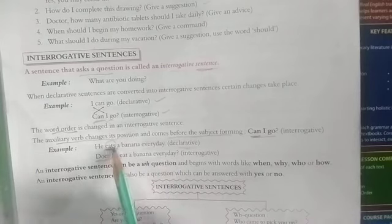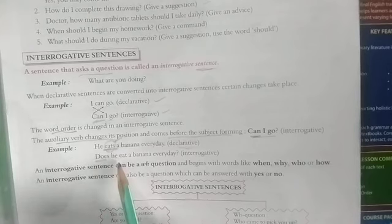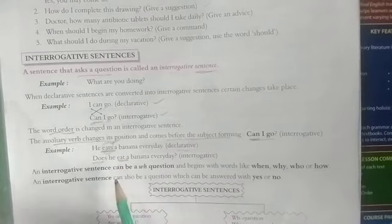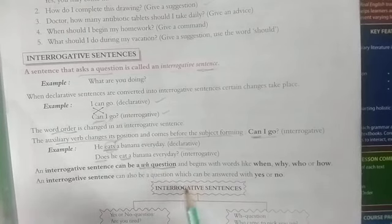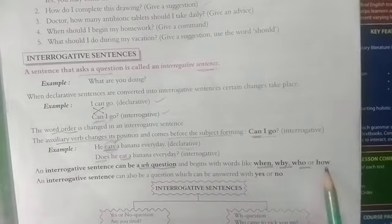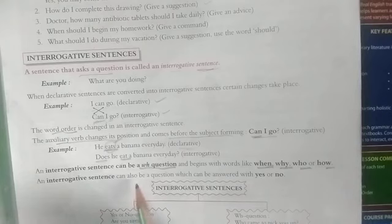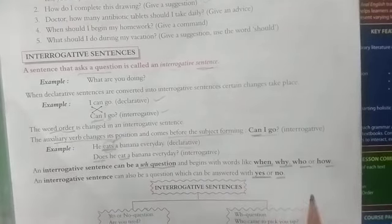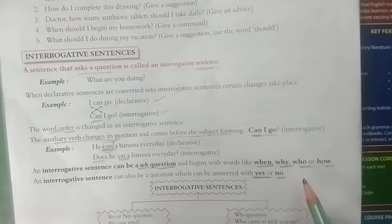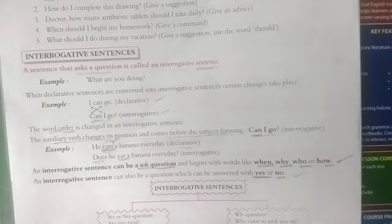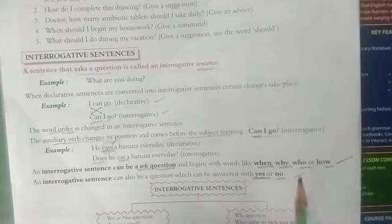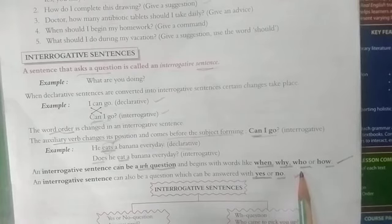When writing the main verb in such questions, there should be no 's' with it. An interrogative sentence can be a WH question beginning with words like when, why, who, and how. It can also be a yes/no question answerable with yes or no. So interrogative sentences are of two types: WH type and yes/no type. Yes/no answers are always yes or no, while WH answers require a full sentence.